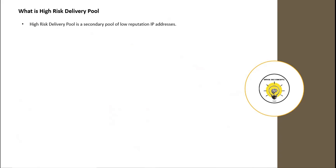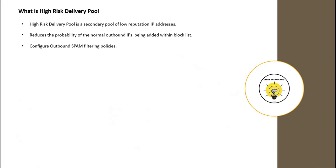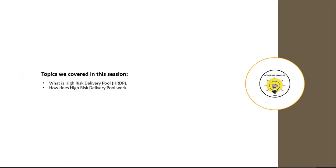Now let's recap what we have discussed about High Risk Delivery Pool. High Risk Delivery Pool is a secondary pool of low reputation IP addresses which are used to route spam or bulk emails. The secondary pool reduces the risk of good reputation IP addresses being added within the block list. To prevent emails from being routed through High Risk Delivery Pool, we can configure outbound spam filter policies.